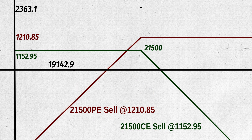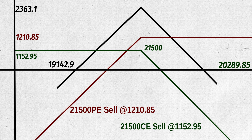From there, full risk to the seller, with every point fall 25 rupees loss per lot. For the upside, we will be in profits till 21,500 plus 2,363.1. From there, however much the price rises, we will be exposed to that much loss, 25 times per lot for each point.